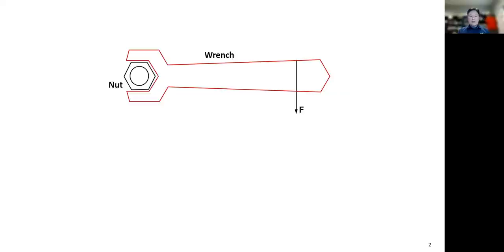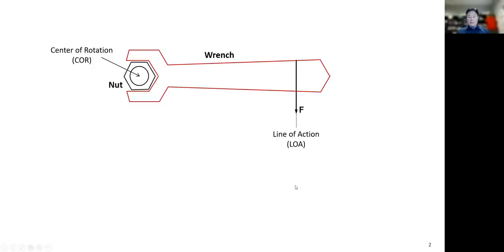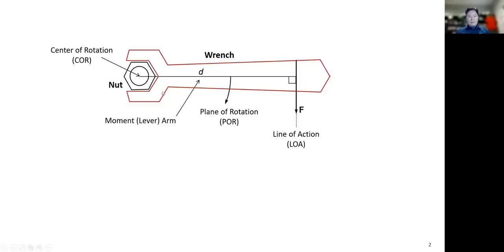Let's imagine a wrench being used to rotate a nut, with force applied at the end. We can find the center of rotation, COR, which is the center of the nut. This line is the line of action of your force. We can find the perpendicular distance from the center of rotation to the line of action, which is the moment arm. When you apply this force, the wrench system will rotate, and this screen will be the plane of rotation.